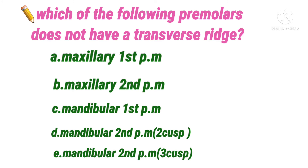Next question: which of the following premolars does not have a transverse ridge? Options are A maxillary first premolar, B maxillary second premolar, C mandibular first premolar, D mandibular second premolar two-cusp type, E mandibular second premolar three-cusp type. A transverse ridge is formed by the union of two triangular ridges crossing the occlusal surface in a buccolingual direction. In a two-cusp premolar, the triangular ridges of the buccal and lingual cusps converge and join to form a transverse ridge. However, in the three-cusp mandibular second premolar — with one large buccal and two smaller lingual cusps — the Y-shaped groove pattern means the triangular ridges do not meet, so there is no transverse ridge. The answer is option E, mandibular second premolar three-cusp type.